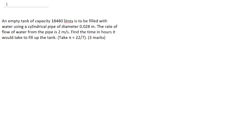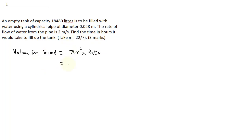In order to solve this question, the first thing you need to know is that volume per second is given by pi r squared multiplied by the rate. Once you can establish this, you can solve this question. So volume per second is going to be: pi is 22 over 7, and for the radius...